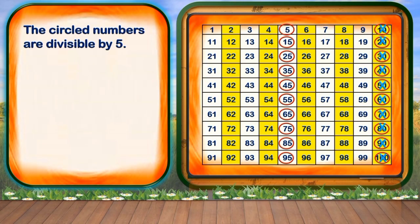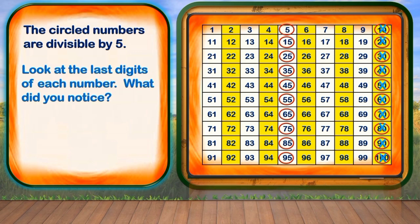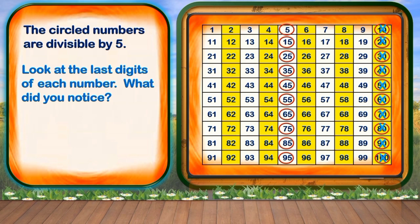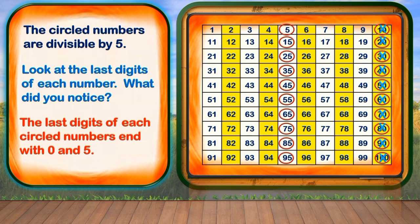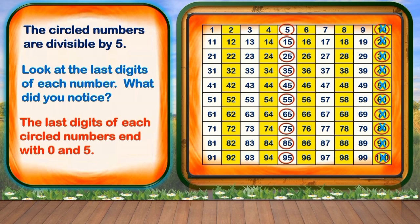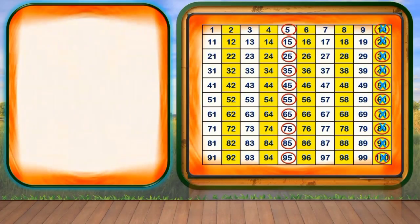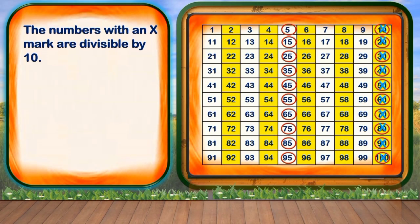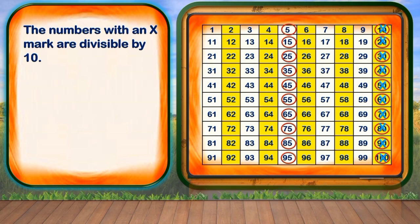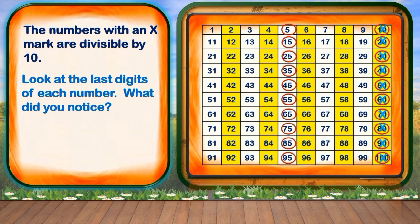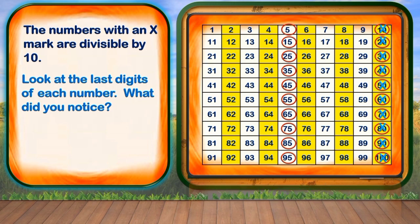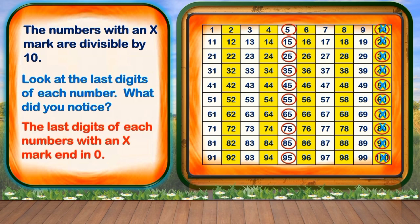The circled numbers are divisible by 5. Again, children, look at the last digits of each number. What did you notice? Correct! The last digits of each circled number end with 0 and 5. The numbers with an X mark are divisible by 10. Once again, children, look at the last digits of each number. The last digits of each number with an X mark end in 0.